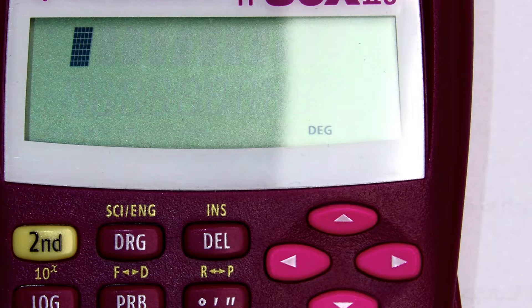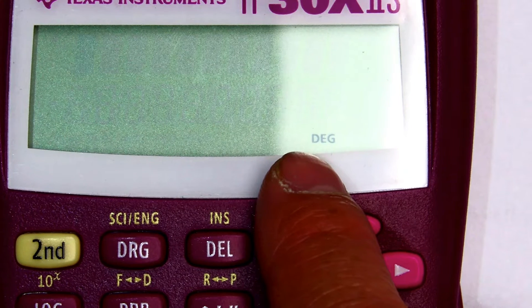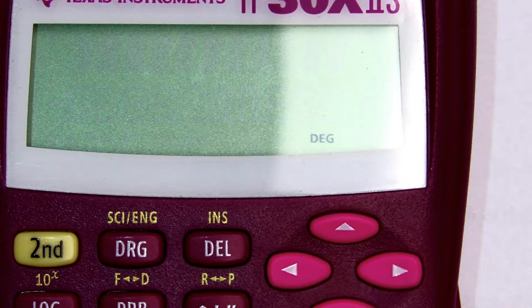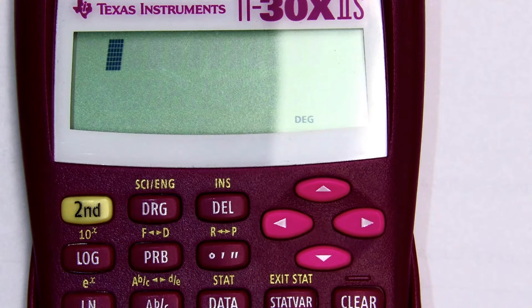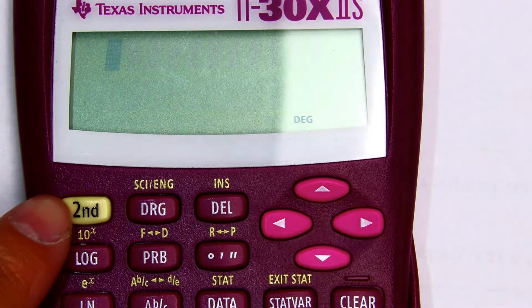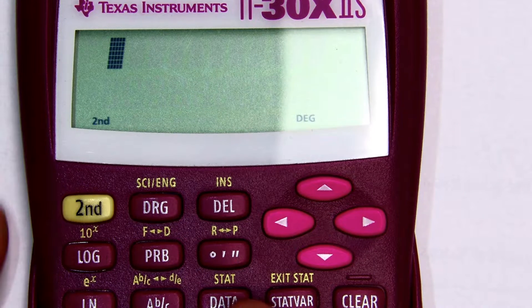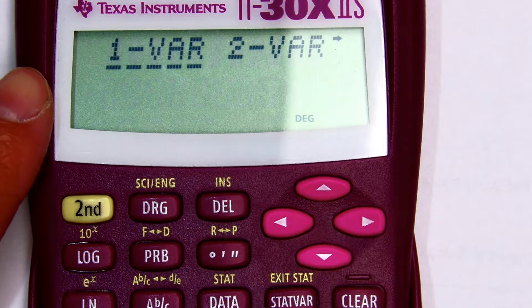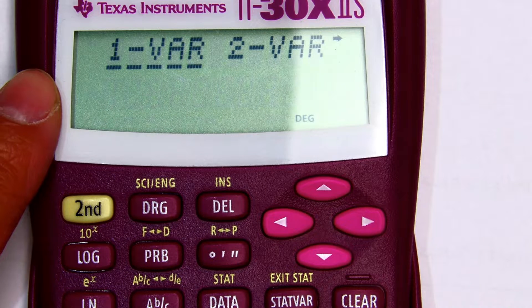Get out of this. Okay, so normally it says degrees. And to get that, there's the stat in yellow, so I'm going to press second, data. And then just press enter at one var, or one variable.